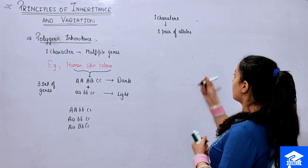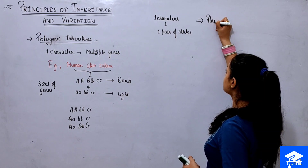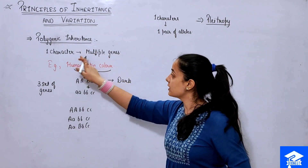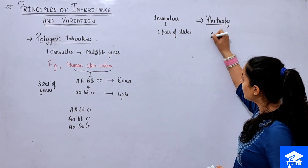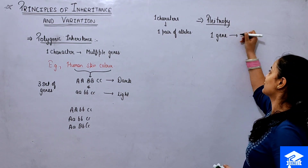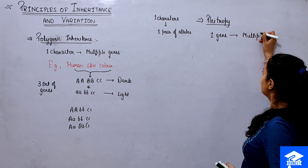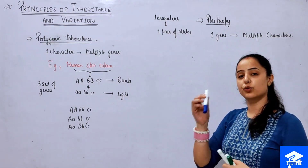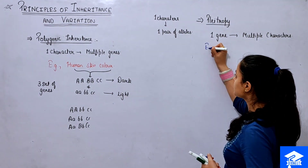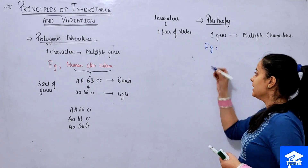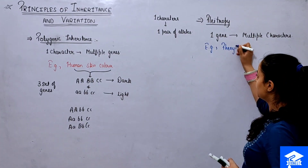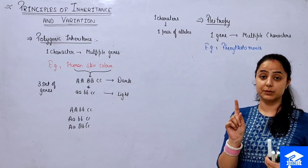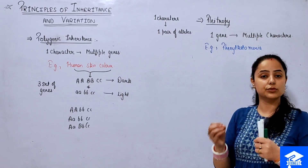The opposite concept is pleiotropy. In polygenic inheritance, multiple genes control one character. In pleiotropy, one single gene controls multiple characters. A disease example of pleiotropy is phenylketonuria, an autosomal genetic disease linked to chromosome number 12. It involves a single gene malfunction.